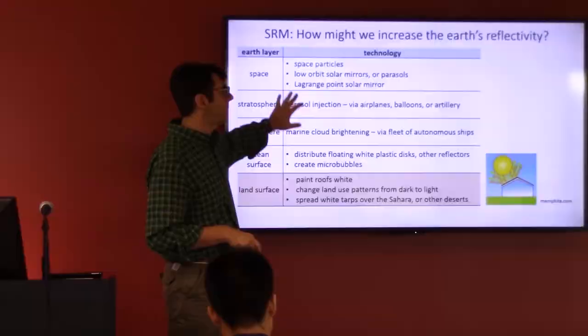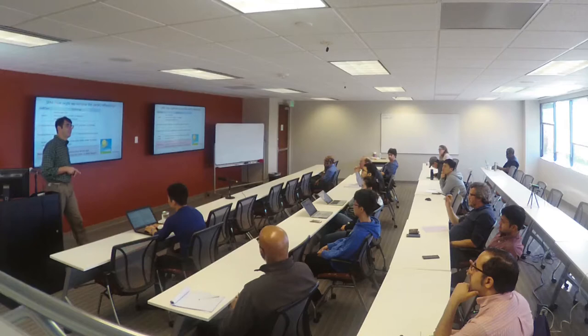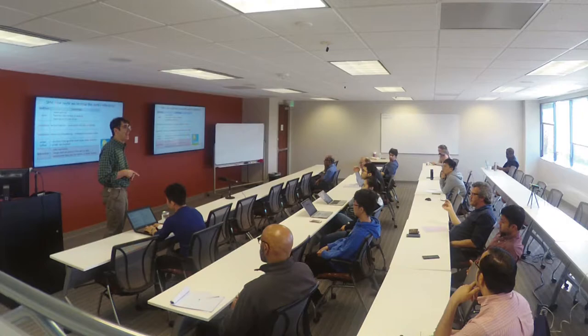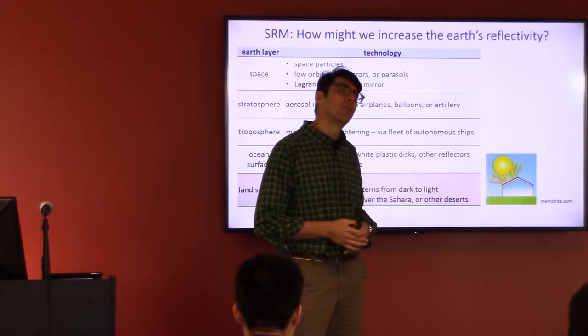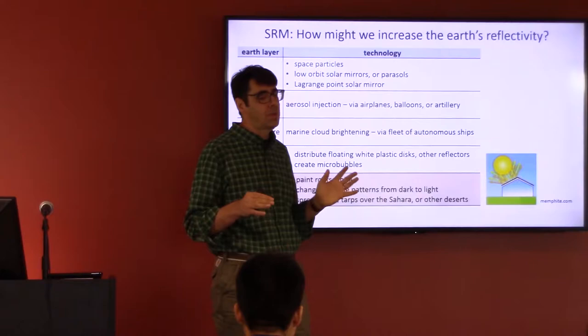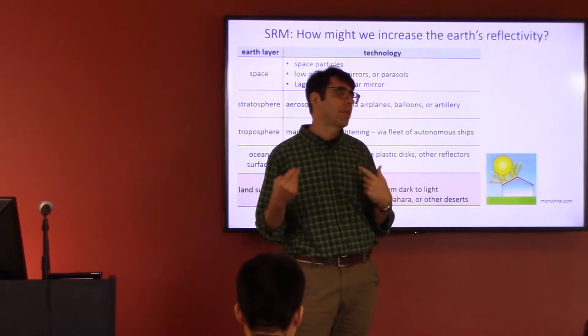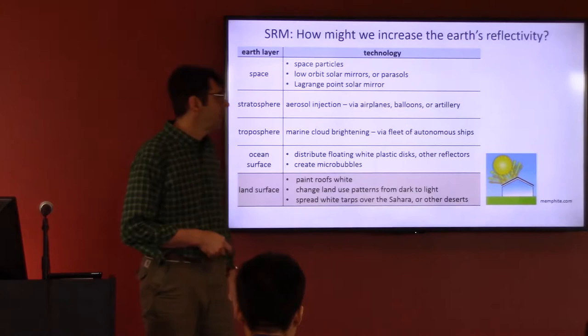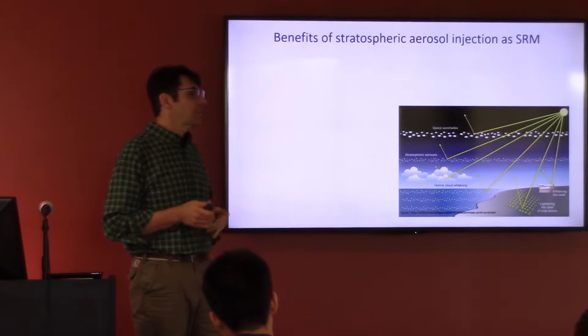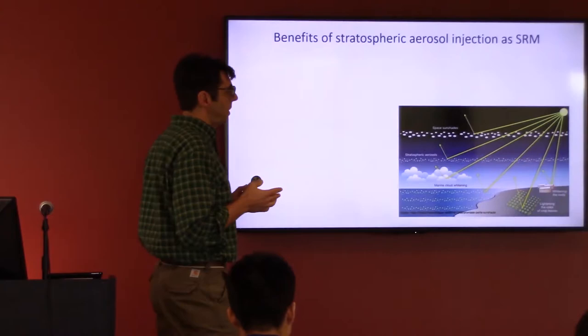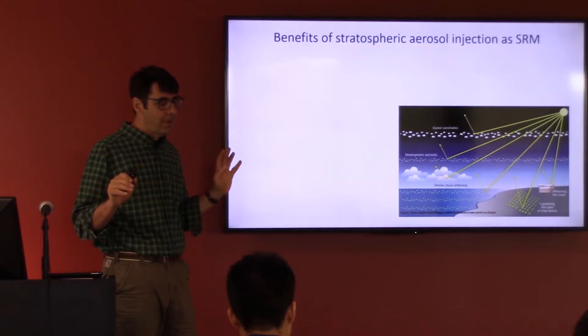It exists perhaps at the land surface level too — painting roofs white, changing land use patterns to a lighter shade, spreading tarps over large areas. The idea is all of these are either blocking the sunlight or reflecting it. I'm going to focus on stratospheric aerosol injection as the strategy. All of what I'm going to talk about is, to a certain degree, not dependent on the particular strategy, because I'm talking more about the idea of geoengineering generally.